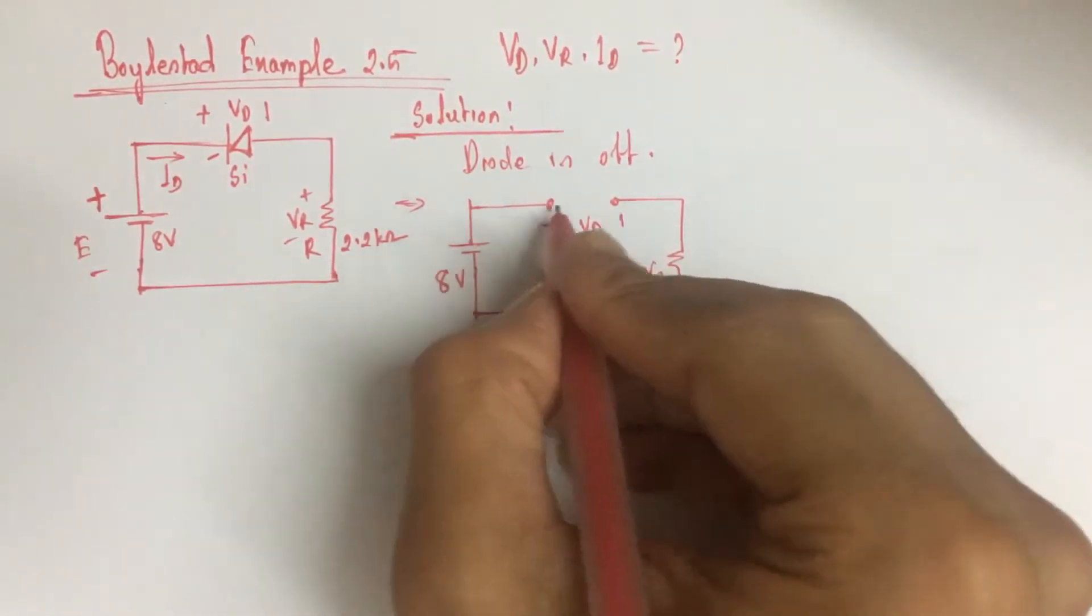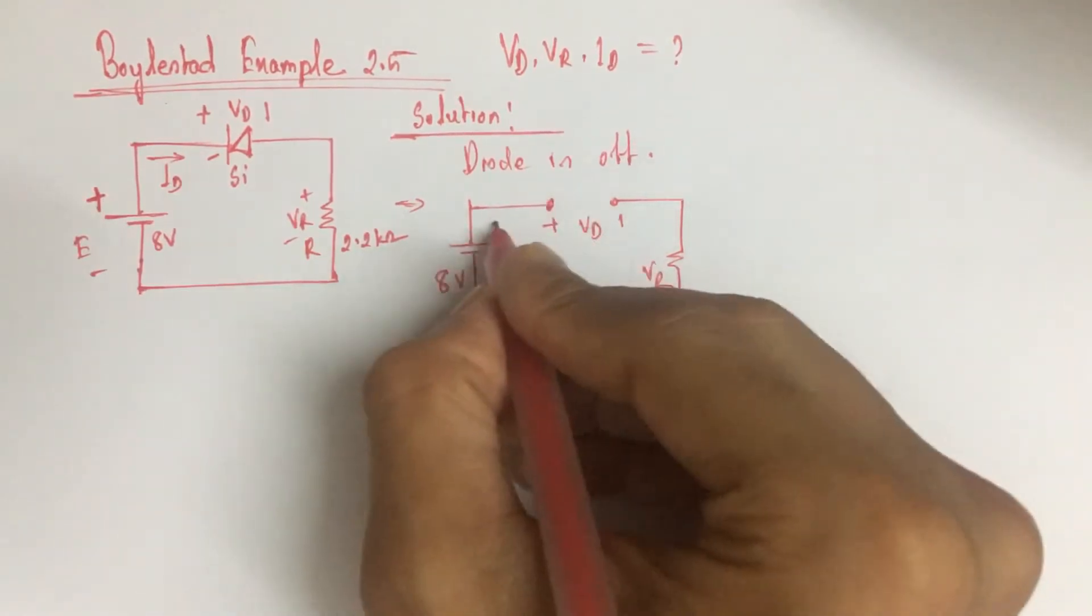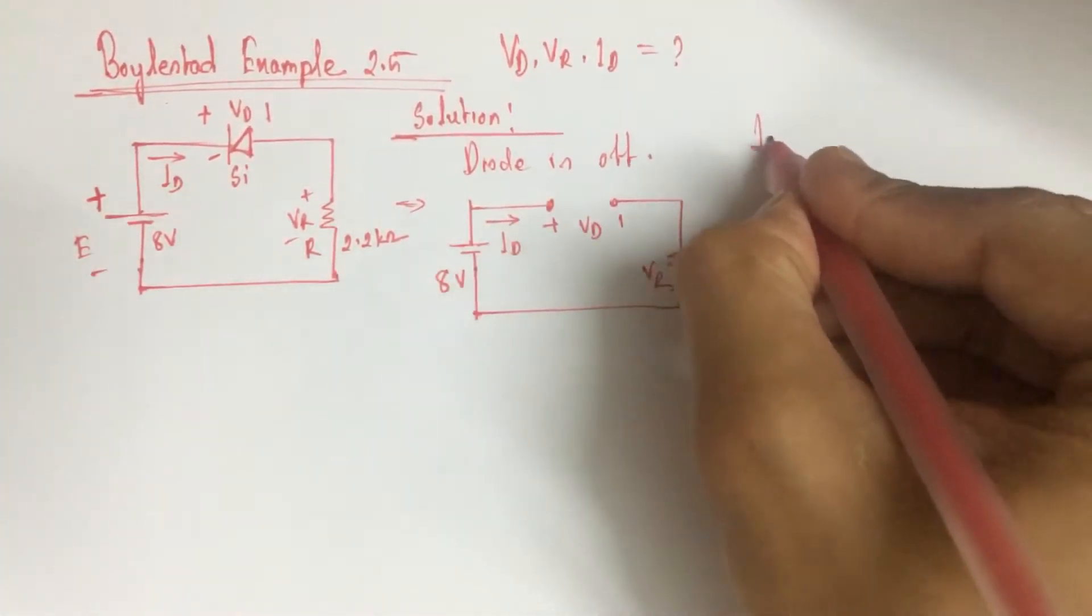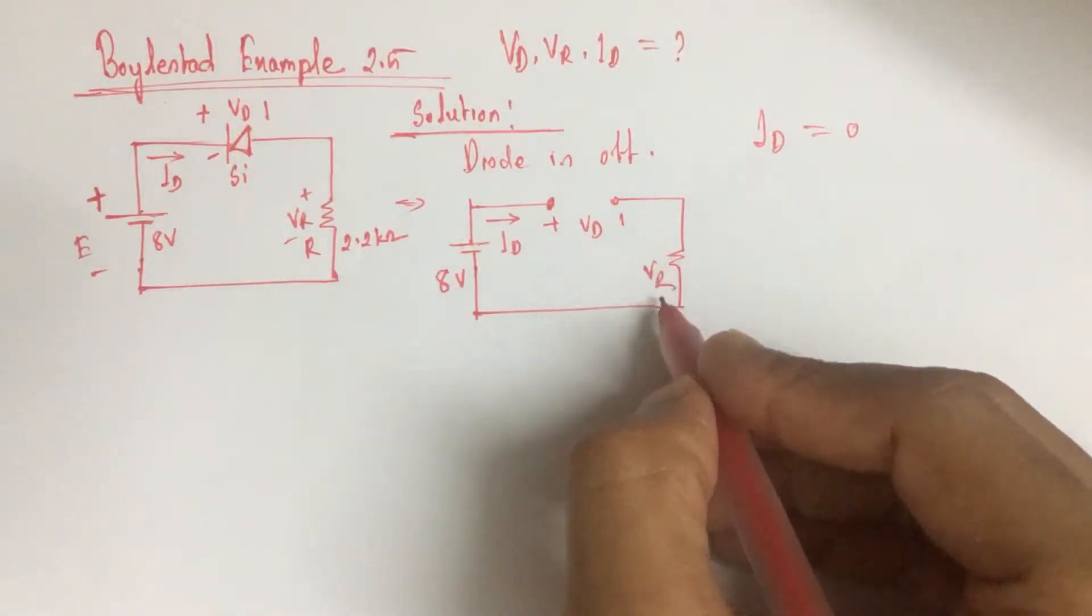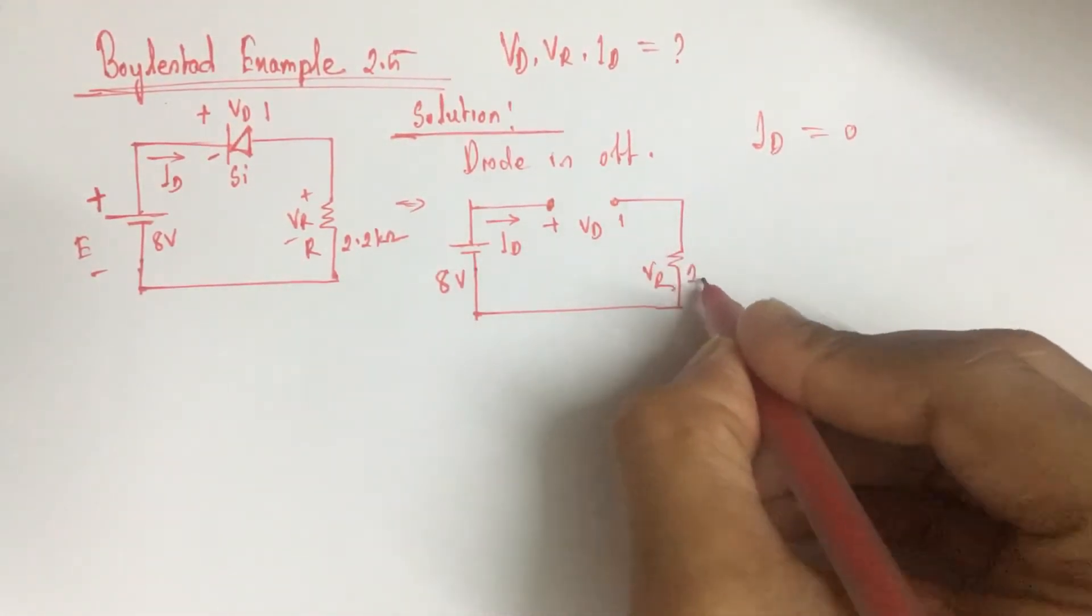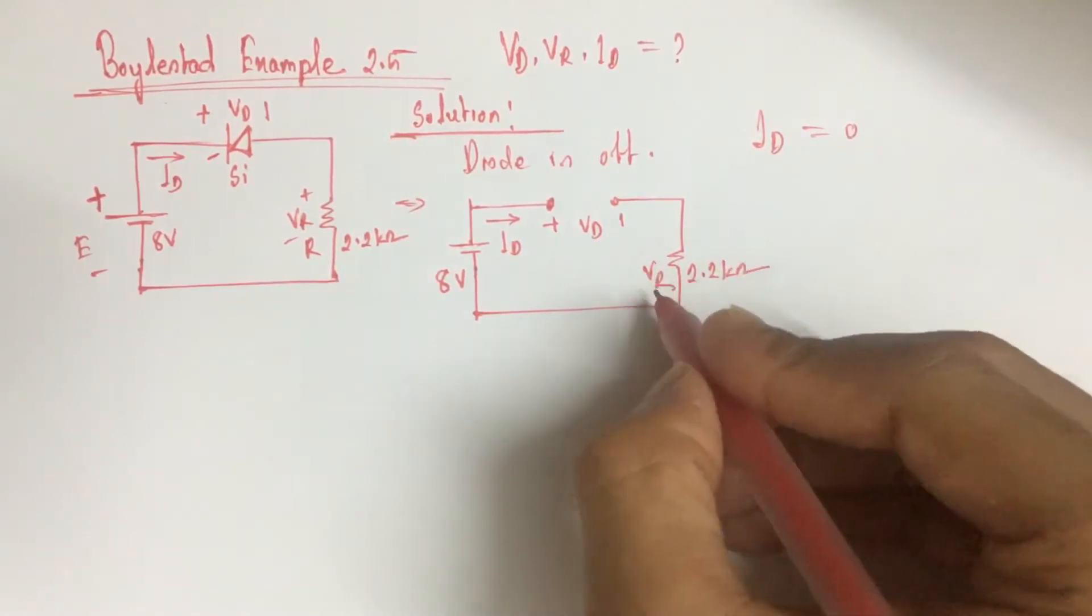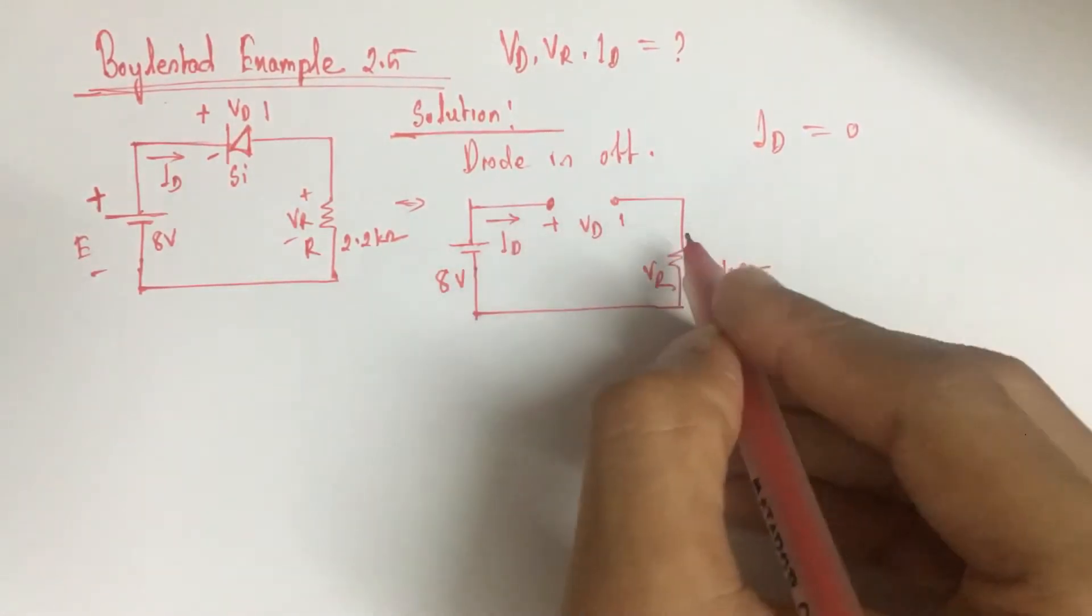So since this is an open circuit at this point, ID is 0, and the voltage drop across this resistance 2.2 kilo ohm is also 0 since current flowing is 0.